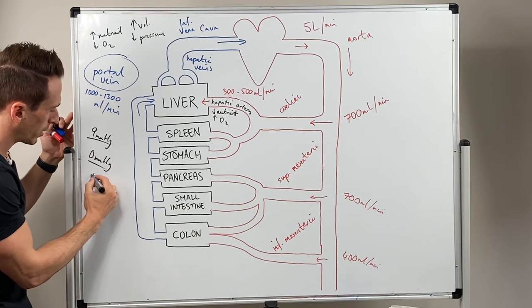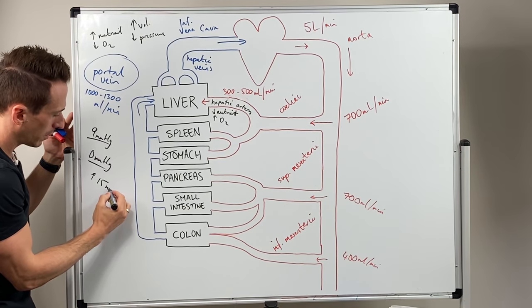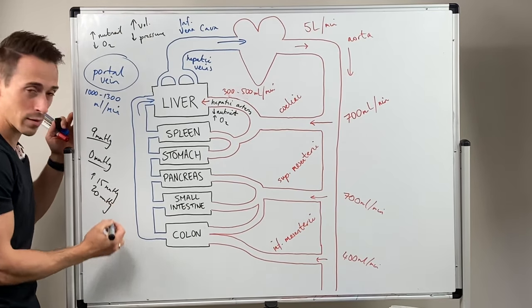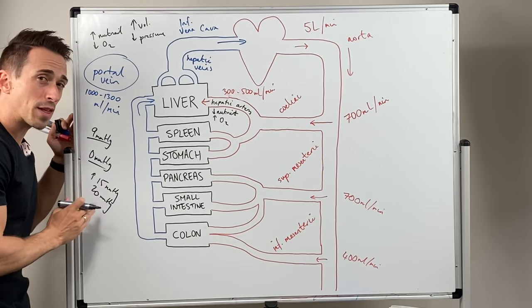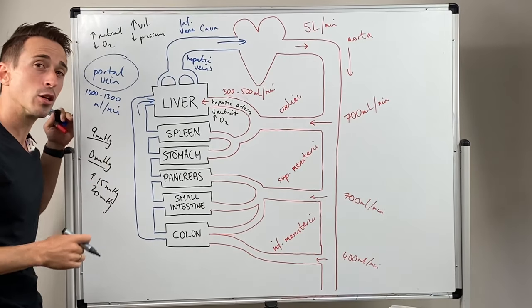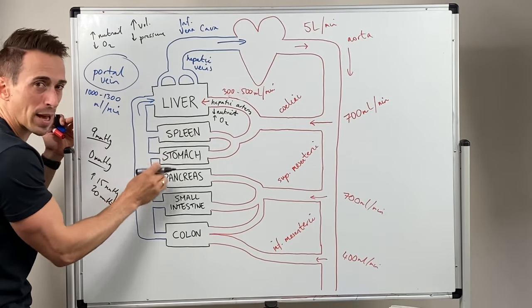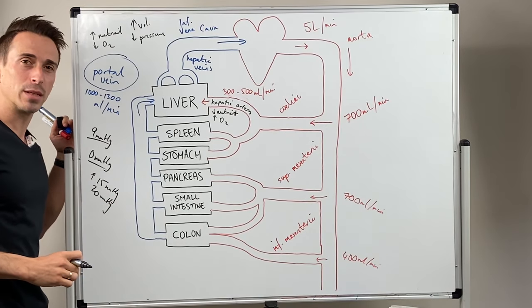And the blood pressure will increase to around about 15 millimeters of mercury, maybe 20 millimeters of mercury. So it's still not that high, but it's significantly higher than nine millimeters of mercury. And that means all this blood backs up into these particular tissues.